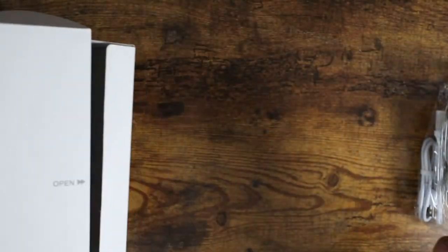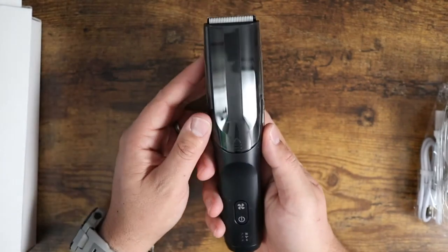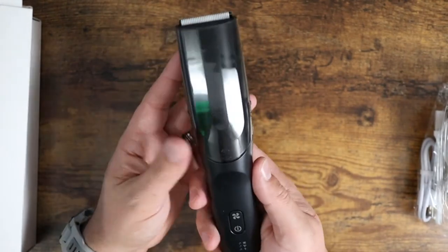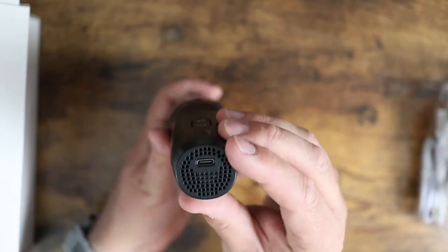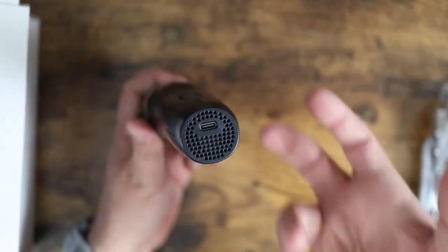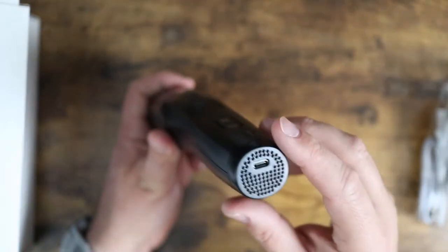It's very straightforward. So here is the trimmer itself. You got your charging port down on the bottom. You can see it has some little vents right here because the vacuum is going to actually suck the air through and out the bottom here.